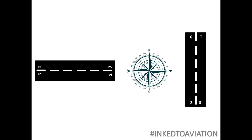For example, if I want to construct a runway of 09, the opposite end is going to be 27, in the west to east direction. If I want to construct a runway heading of 089 and 269, they are rounded off to the closest tens, hence 09 and 27.